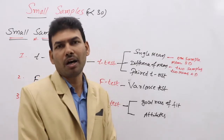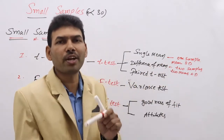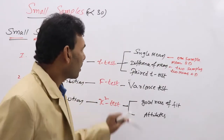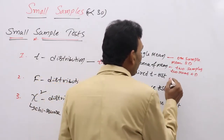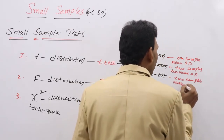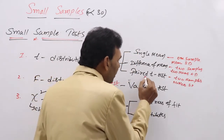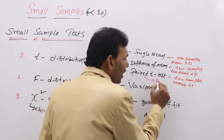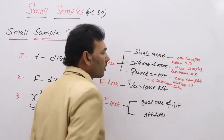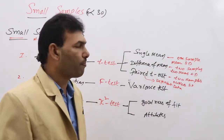Difference of means test is applied whenever we have two different samples — not one — with two means and SDs. Whenever the question starts with two different samples of sizes, like 1000 and 2000, we go for difference of means. For paired T-test, you will also have two samples, but no mean and no SD given. Paired T-test is applied for dependent or related data — when X is related to Y.